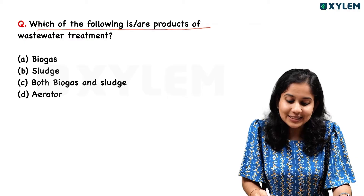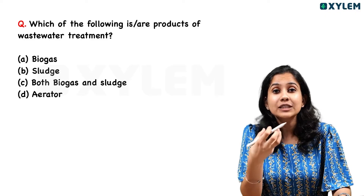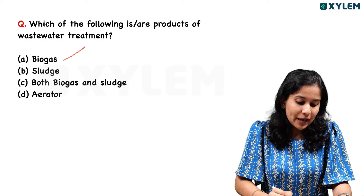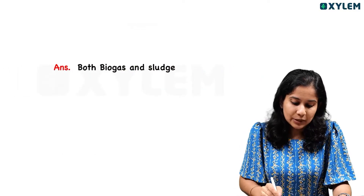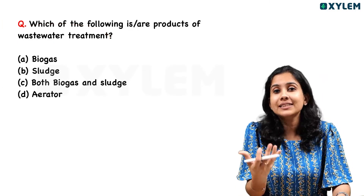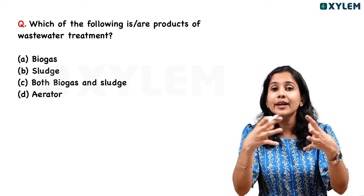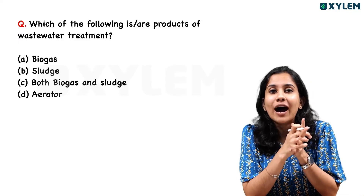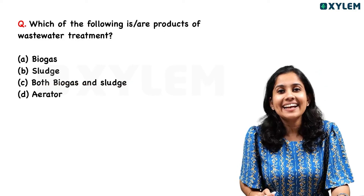Next question: which of the following are products of wastewater treatment? Options are biogas, sludge, or both biogas and sludge. The answer is both biogas and sludge are products of wastewater treatment.